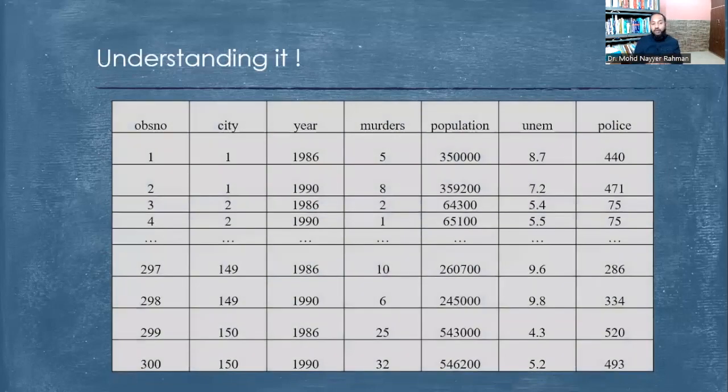If we try to see an example of this, we have observations, we have city, we have year. Now city 1, 1, 1, 2, 2, 149, 149, 150, 150 - this means for city 1 we will have data from 1986 to 1990. For city 2 we will have data from 1986 to 1990, for city 3 we will have the same thing. So we are having cities and then we have years.